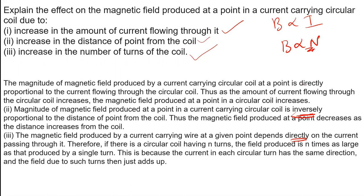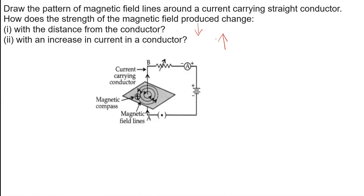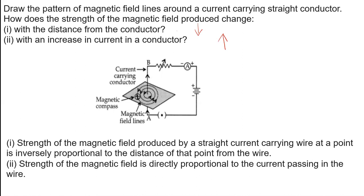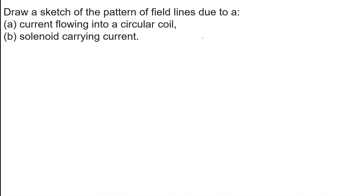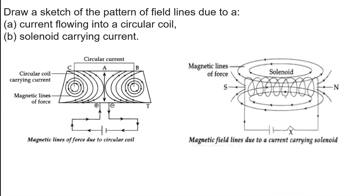Magnetic field is directly proportional to current I, also directly proportional to number of turns N, and inversely proportional to the distance. Draw the patterns of the magnetic field lines around the current-carrying straight conductor. When distance increases, the magnetic field decreases; increasing the current, the magnetic field increases. So it is inversely proportional to distance and directly proportional to current. Draw the pattern of the magnetic field lines due to a current-carrying coil and a solenoid — these are very, very important diagrams.